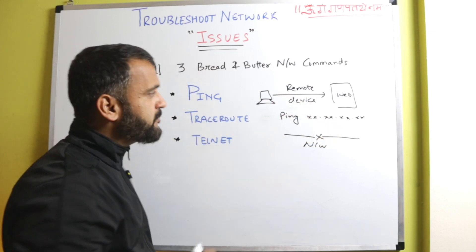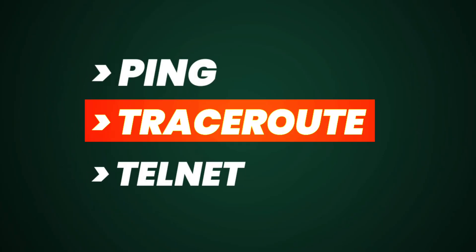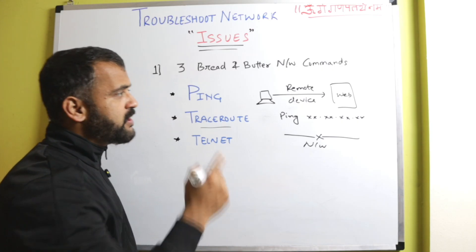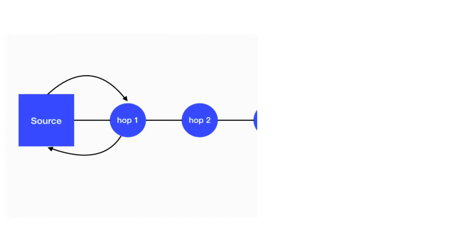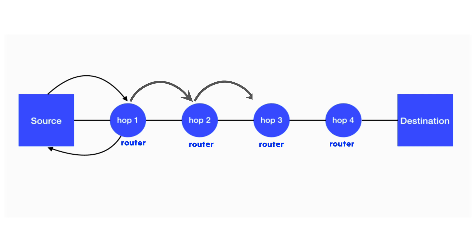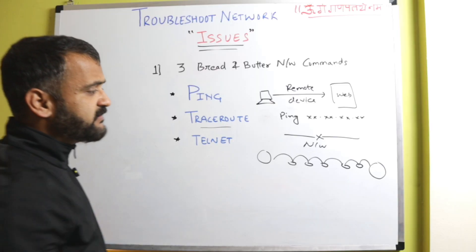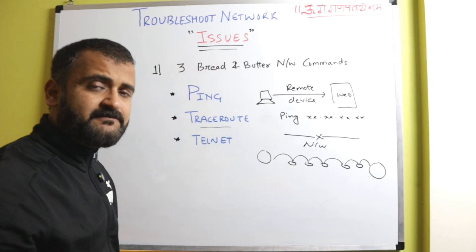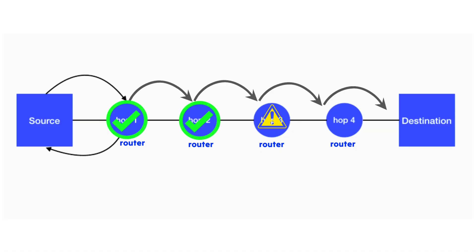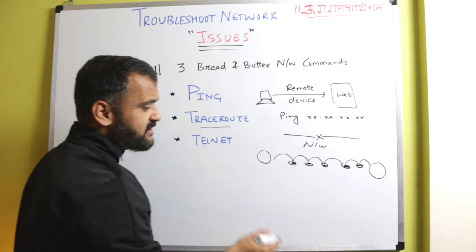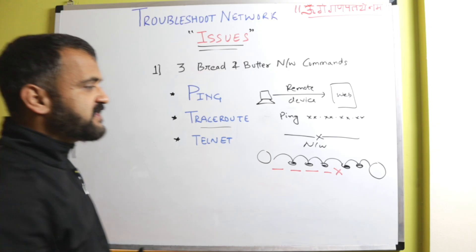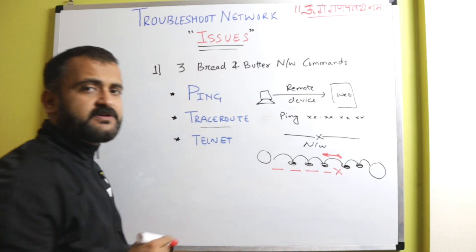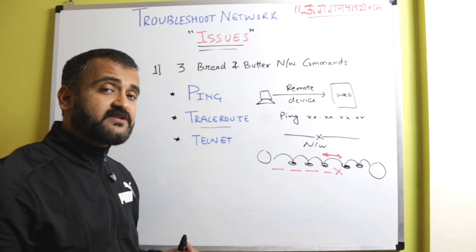If you see that the ping response is not coming, your immediate next step should be traceroute. What traceroute does is, from your source to your destination, it checks every hop the network takes — maybe through different router devices. There is a time-to-live packet, and it checks whether it is getting a response from every place or not. If it breaks at some point, it will show you step by step where the problem is present. So traceroute is a very good tool.